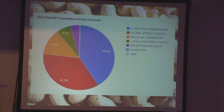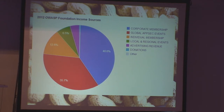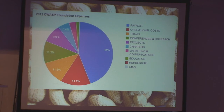The other thing we've been working on is communicating better about our finances. To give a quick overview of our income sources from last year: corporate membership is about 40%, which is our biggest category. The second is global AppSec events such as this — we host one in Asia Pacific, one in Latin America, one here in Europe, and one in the U.S. every year, and these provide a large fundraising effort. So thank you all for coming.